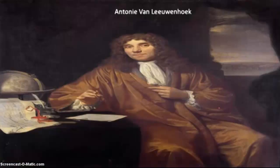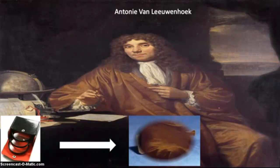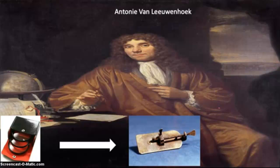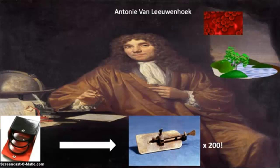Next we visit Anthony van Leeuwenhoek. He loved lenses so much that he collected them and made his own microscope, with which he could see things 200 times bigger. His love for lenses and curiosity led him to make that microscope. He was the first scientist to observe cells and microorganisms. See where your love for science can lead you!